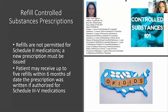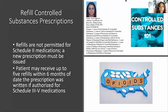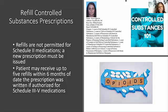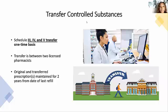For example, say a patient comes in on January 1st with a prescription for Xanax written for five refills. If they return on July 31st wanting a refill, the pharmacist or tech would explain that the prescription has expired. Even though the bottle shows five refills remaining, the prescription was only good for six months — through June 30th. The patient would need to go back to the doctor and get a new prescription.